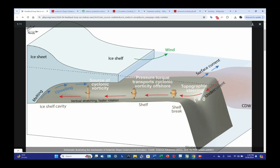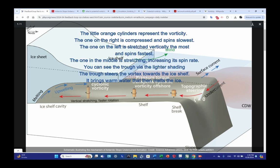So what we have here, you see these little things here, called pressure torque transports cyclonic vorticity offshore. And we have the source of cyclonic vorticity. Here we see vertical stretching, faster rotation. Here we have vertical compression, slower rotation. It's not written in there, but that's what happens. So this is supposed to represent a parcel of water and it's rotating. You can see it's even a slower rotation here and it's really compressed there.